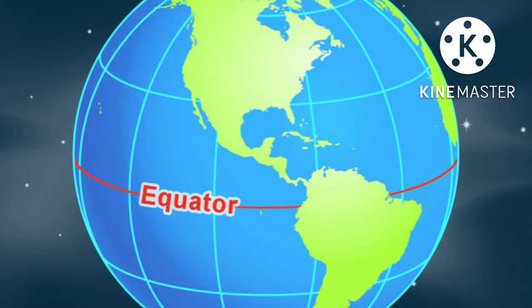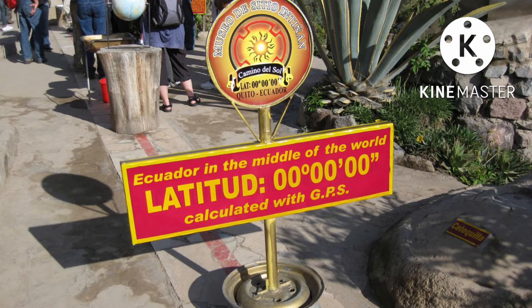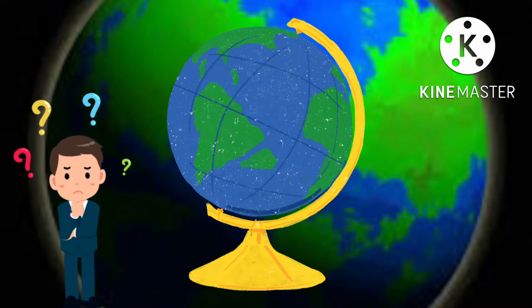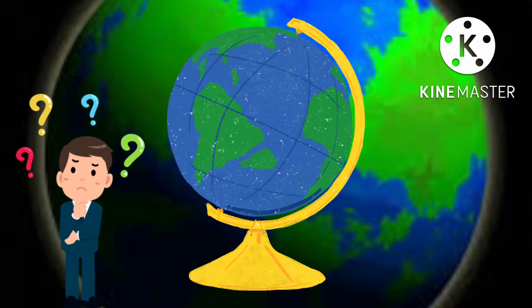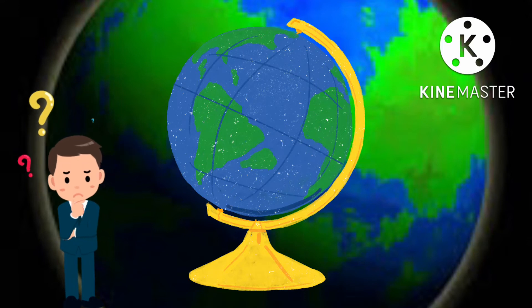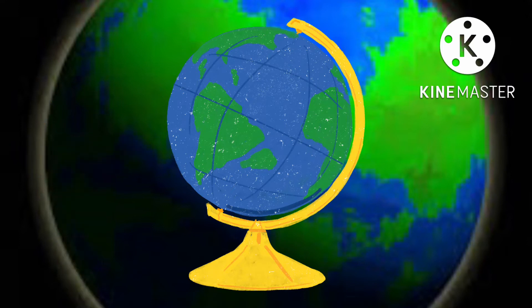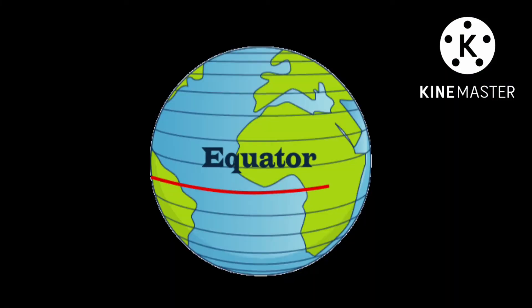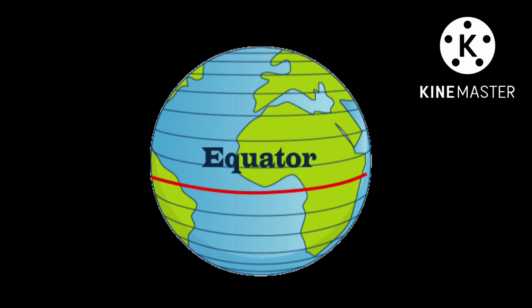The exact location of the equator on the map is called latitude 0 degree. Who invented the equator? No one, because it is just a line on a map. It is believed that a team of French explorers mapped it in 1736. The equator is 40,075 km long.